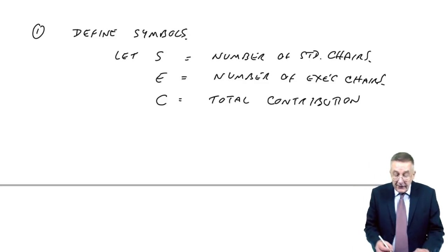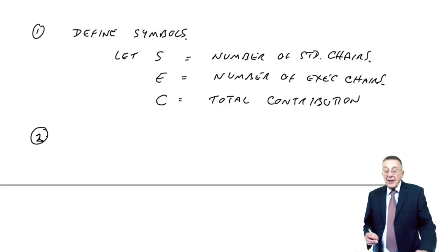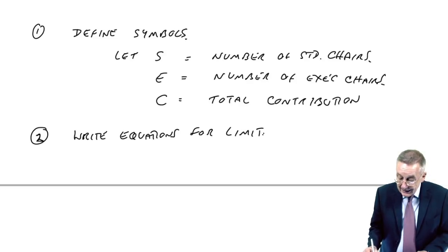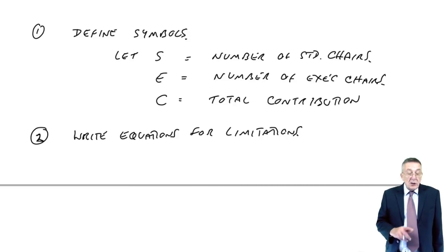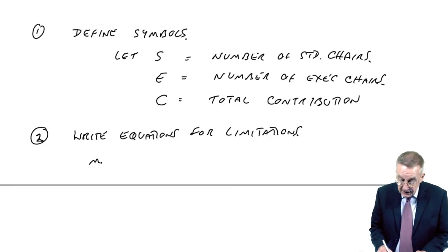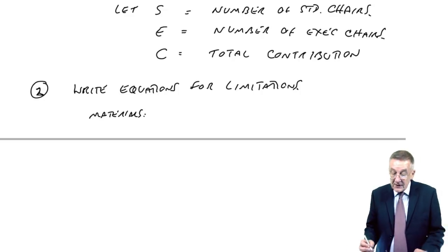Fine, no problem. Having done that, step two is to write equations for the limitations. The words don't matter. It's more importantly clear what I mean by that. Let's look through it in turn. What limits are there on our production? First of all, there's a limit on the materials.